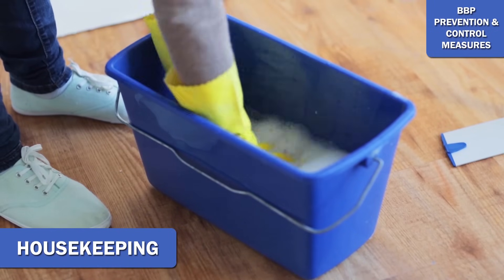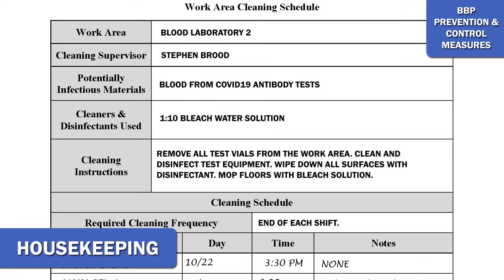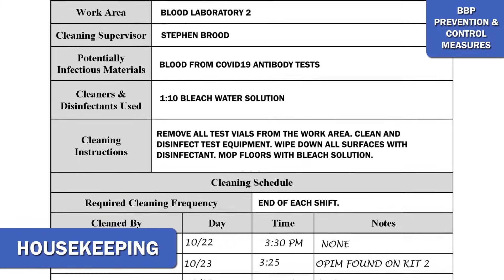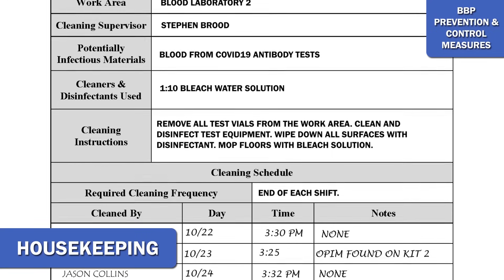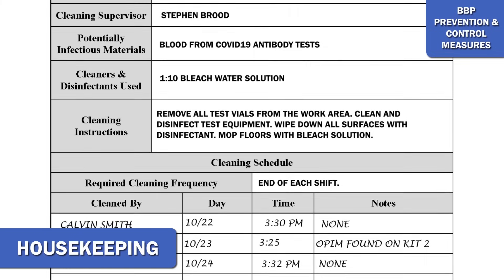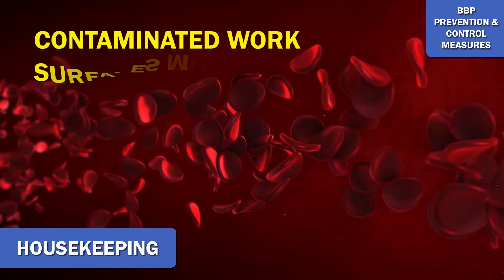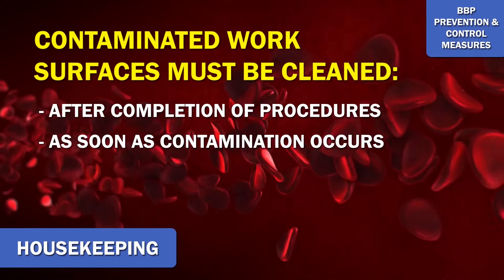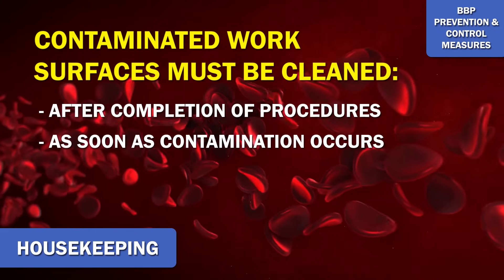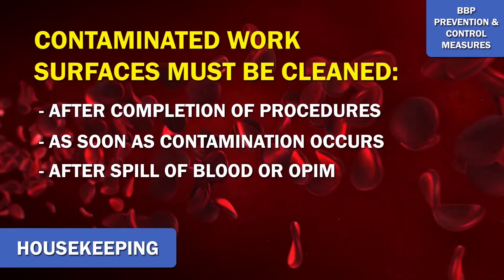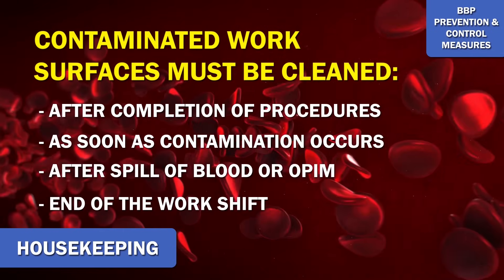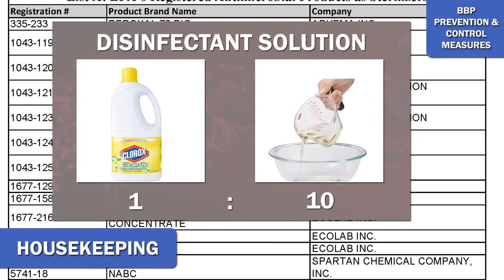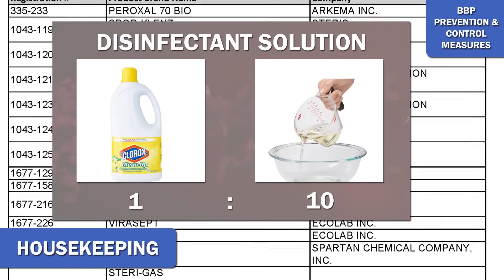The workplace must be maintained in a clean and sanitary condition. The employer shall implement an appropriate written schedule for cleaning and decontamination based upon the location within the facility, type of surface to be cleaned, type of soil present, and tasks or procedures being performed in the area. Contaminated work surfaces shall be decontaminated with an appropriate disinfectant after completion of procedures, immediately when surfaces are overtly contaminated or after any spill of blood or OPIM, and at the end of the work shift. Disinfectants must be EPA approved. OSHA allows for a disinfecting solution of one part bleach to 10 parts water.